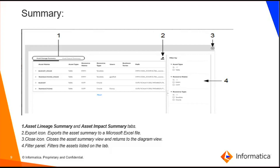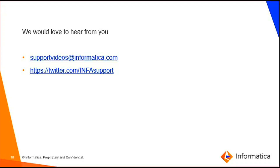To summarize the video: we saw what information the asset summary view shows, we saw how to filter the asset summary view, and finally we learned how to export the asset lineage and impact summary. That will be all for this video. If you have any queries or any feedback for this video, you can reach out to us on the following links. Thank you.